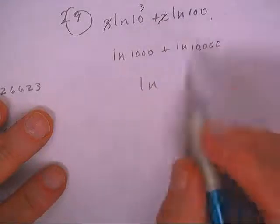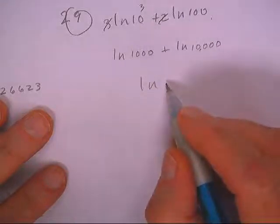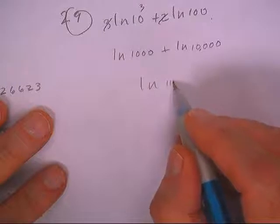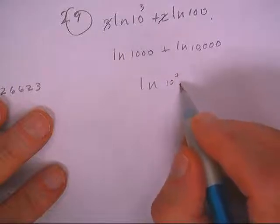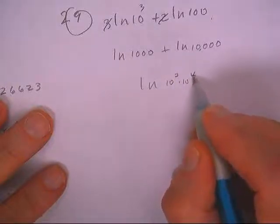So that's ln of this one times that one, which would be 10 to the third times 10 to the fourth.